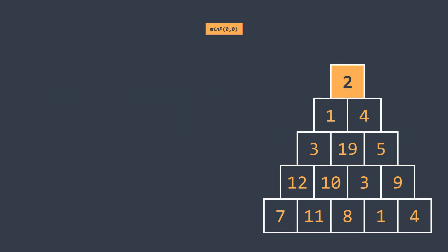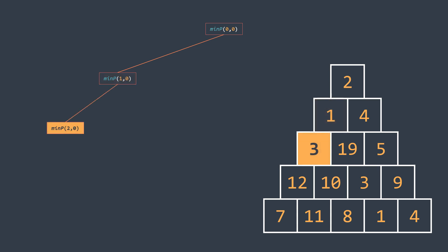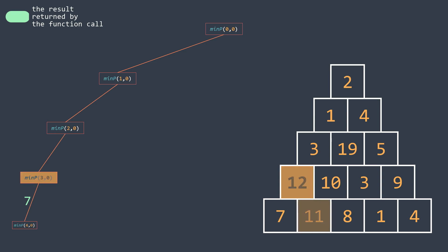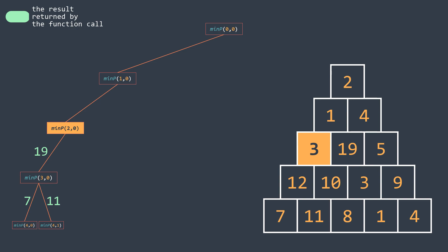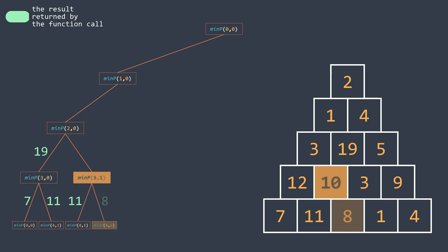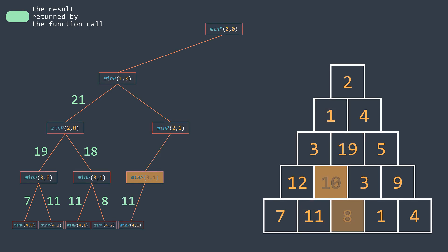To get the min sum from top to bottom, we first need the min sum from its adjacent cells, starting with the left one. We keep going left recursively until we hit the base case — the last row — where we return the value of that cell, which is 7. We backtrack, get the right value which is 11, and return 12 plus the minimum of 7 and 11, which is 19. Similarly from the right branch we get 18, so this cell returns 3 plus 18 equals 21. The recursive process continues until we get the minimum sum, which is 15.